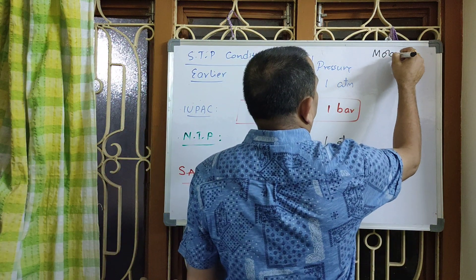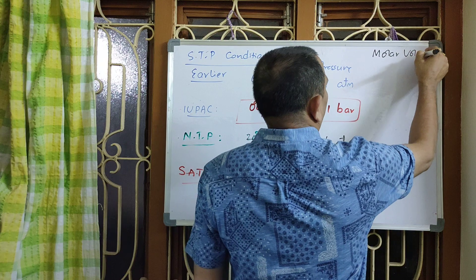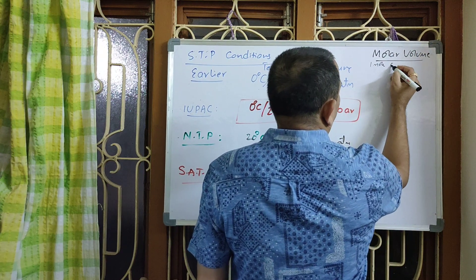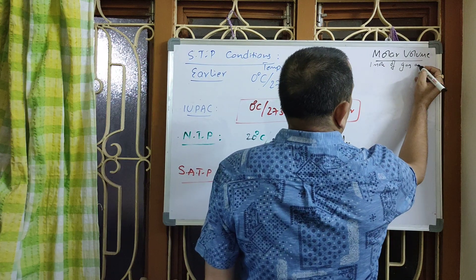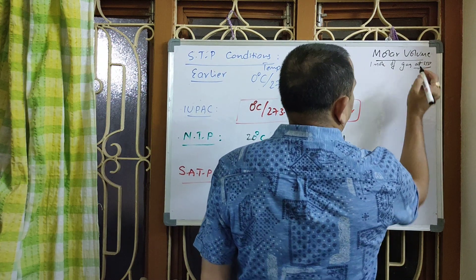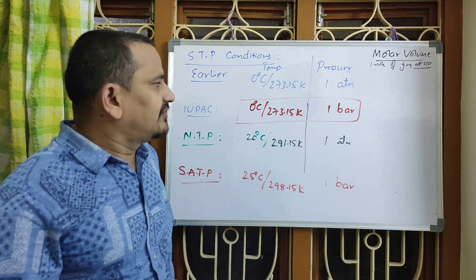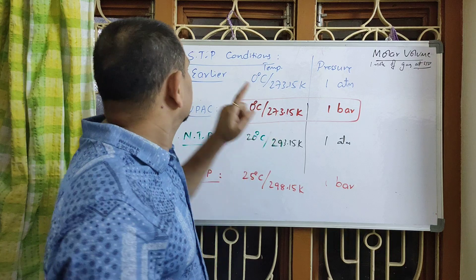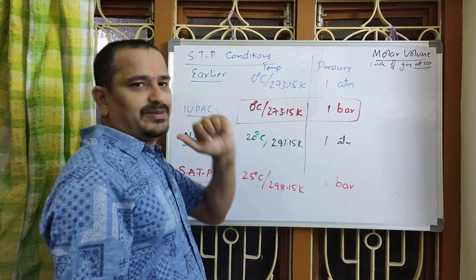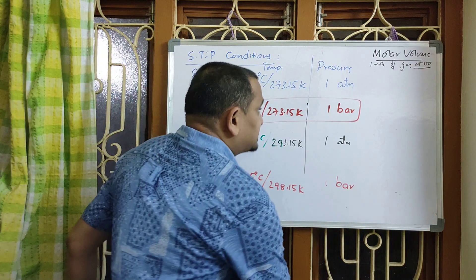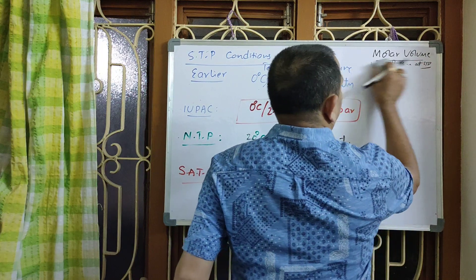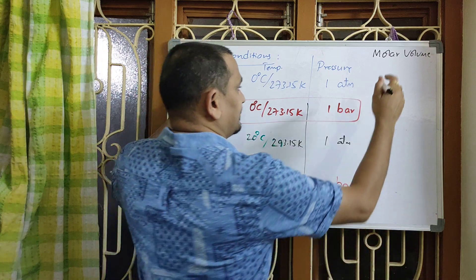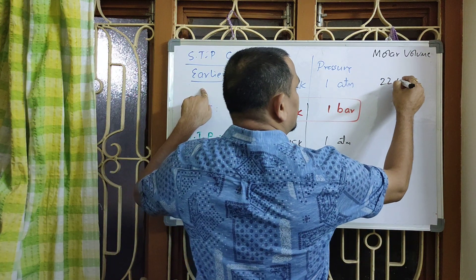Molar volume means volume occupied by 1 mole of any gaseous substance at STP. We usually follow STP conditions. At old STP conditions, the volume occupied by 1 mole of any gas will be 22.4 liters. How is this calculated? Using the ideal gas equation PV = nRT, where V = nRT/P.